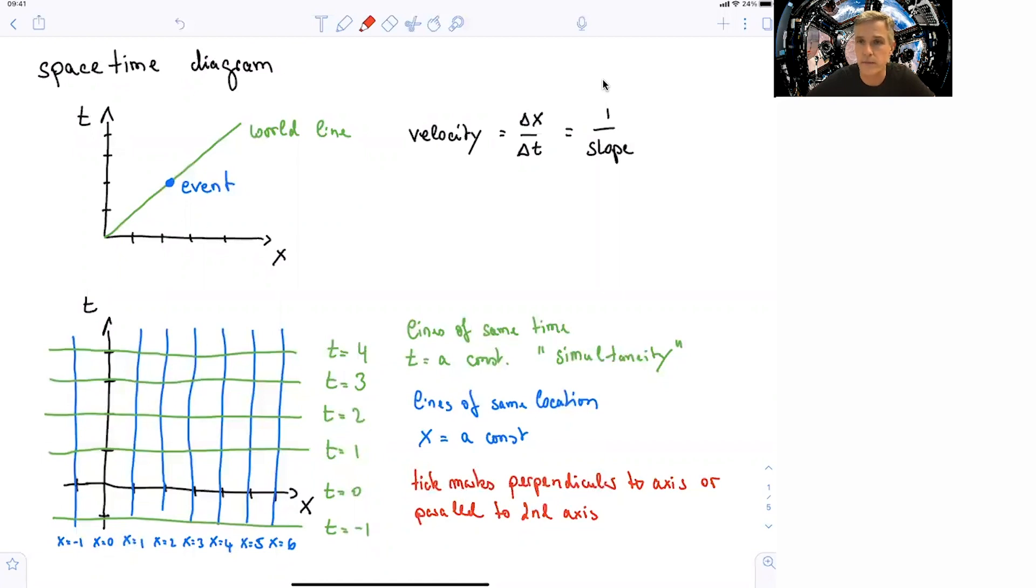we talk about space-time diagrams. They turn out to be very useful tools to describe events or sequences of events, in particular, when observed by multiple observers.